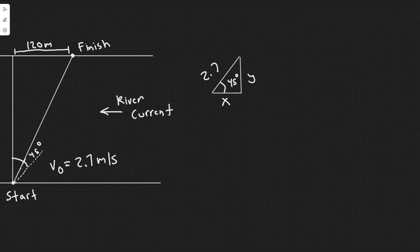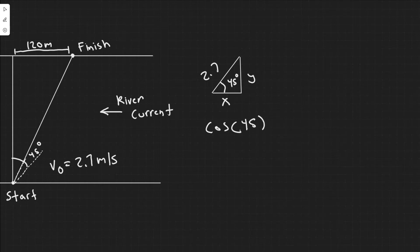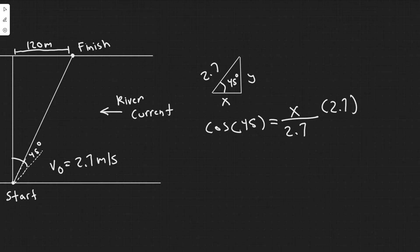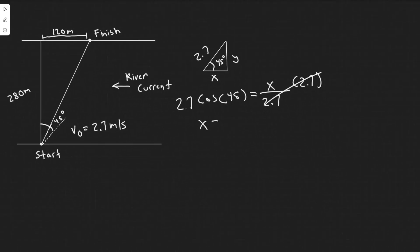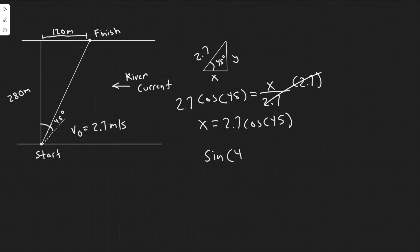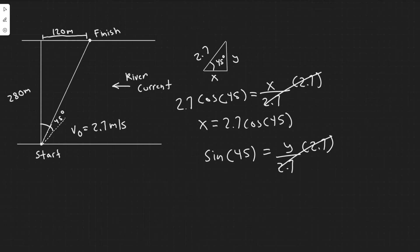We'll use trig — sine and cosine — to solve for x and y. For the x component, cosine of an angle equals the adjacent side over the hypotenuse, so cos(45) = x / 2.7, giving x = 2.7·cos(45). For the y component, sine equals opposite over hypotenuse, so sin(45) = y / 2.7, giving y = 2.7·sin(45).